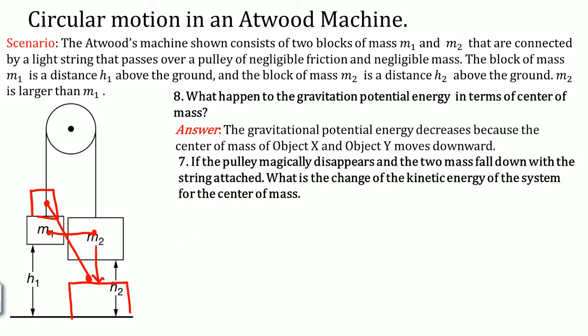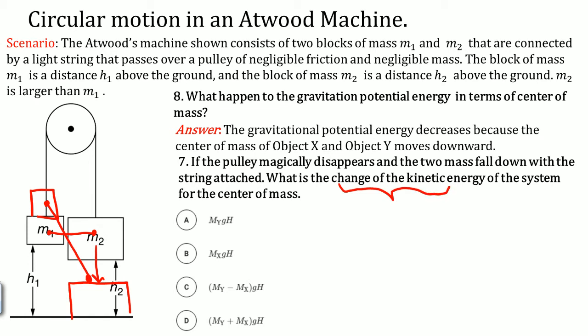Now, if the pulley magically disappears and everything starts falling, what is the change in kinetic energy of the center of mass? The change in kinetic energy is going to be mgh — kinetic energy equals potential energy. So it is (M_Y plus M_X) times g times H because this is the mass of the system.